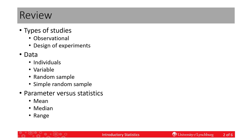We have two types of random samples that we will see in this course. The first is simply a random sample, which means that each individual in the population of interest has an equal chance or probability of being selected. A simple random sample says that for any group of size n individuals, every possible group of individuals of size n has exactly the same chance of being selected.